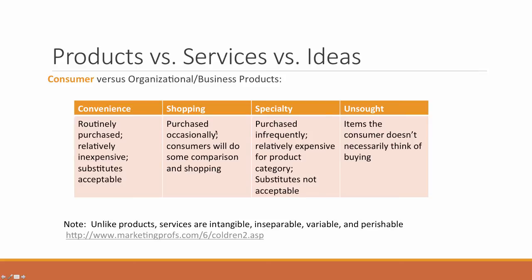For example, while a jar of jelly would typically be considered a convenience product, if I hand-grow the berries, hand-pick them, hand-make the jelly, put them in special jars with special labeling, and sell them only at specialty gourmet food stores, then this jelly becomes a specialty product. It would be more expensive than brands found at a typical Walmart or grocery store, and people would specifically seek out that brand.